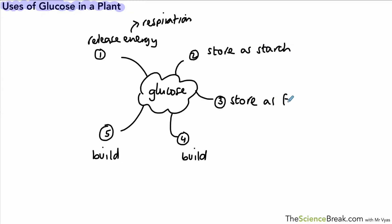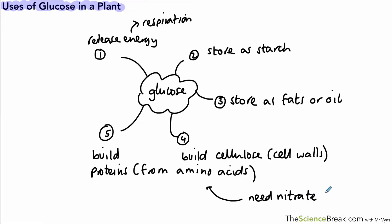So what were we releasing? We were releasing energy from respiration, storing as starch, storing as fats and oils, and then building something. What was that? Well it was cellulose to build cell walls and building proteins from amino acids. There was one more detail to remember about that, and that was the fact that we also need nitrate.